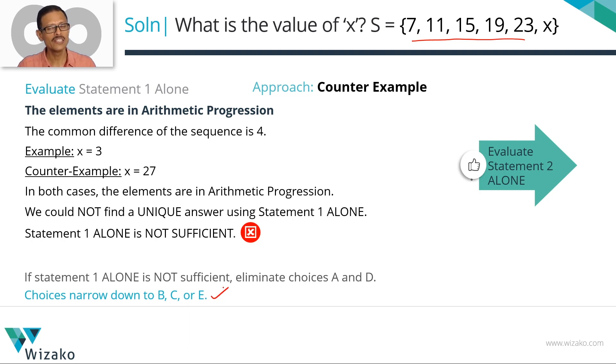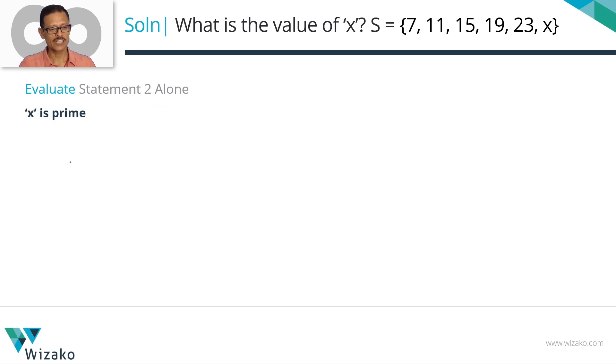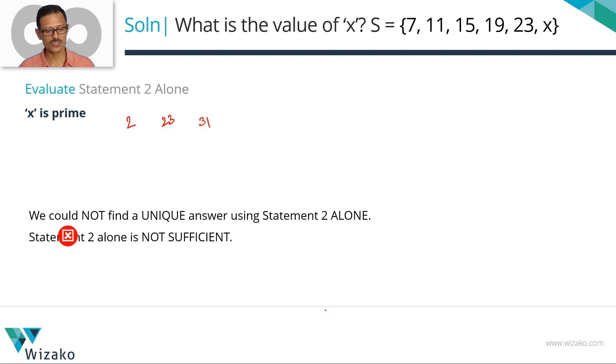Evaluate 2 alone. Forget ever having read statement 1. What does statement 2 say? It says that x is a prime number. Infinite prime numbers. x could be 2, x could be 23, x could be any number like 31, 47. They are like umpteen. Infinite values possible for x. This statement is very easy to say it's not sufficient. 2 alone is not sufficient.